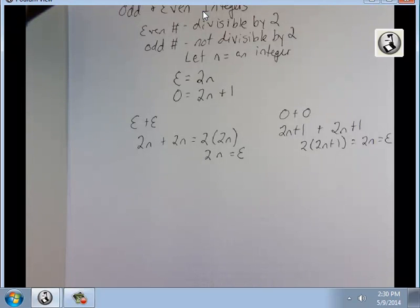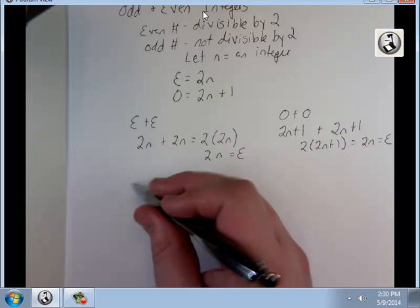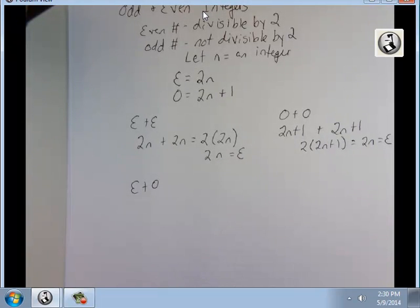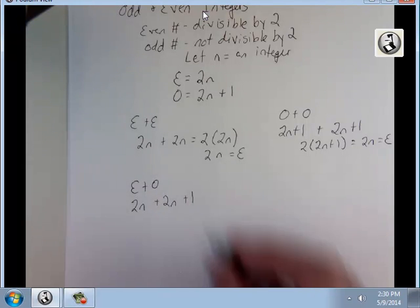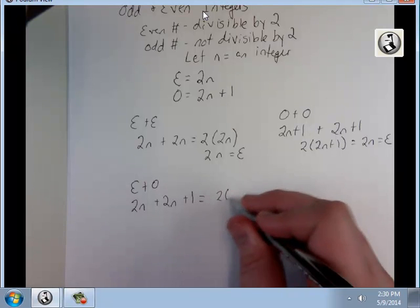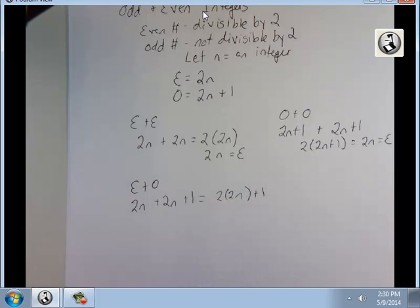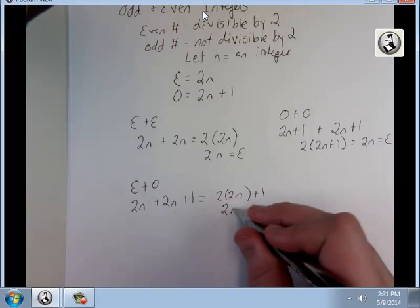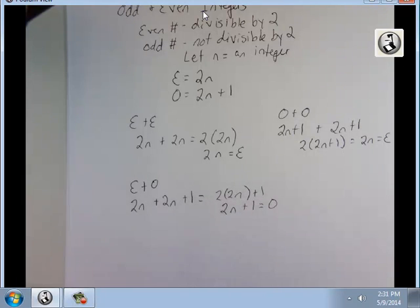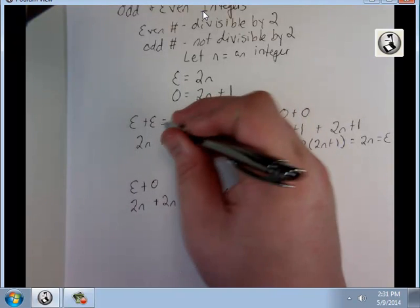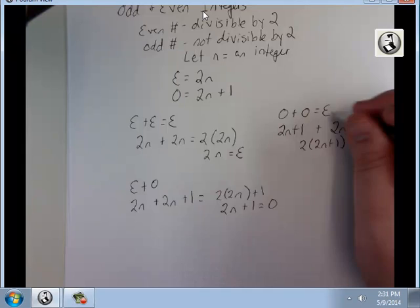Here's the trick, though. Even plus odd. Well, I have 2n plus 2n plus 1, which I have two 2n's, and I'm adding 1 to them. So I can rewrite this as 2n like I did up here, but now I'm adding 1 to it. And that's the definition of an odd number. See, we're just going back up to here. So even plus even is even, odd plus odd is even, and even plus odd is odd.